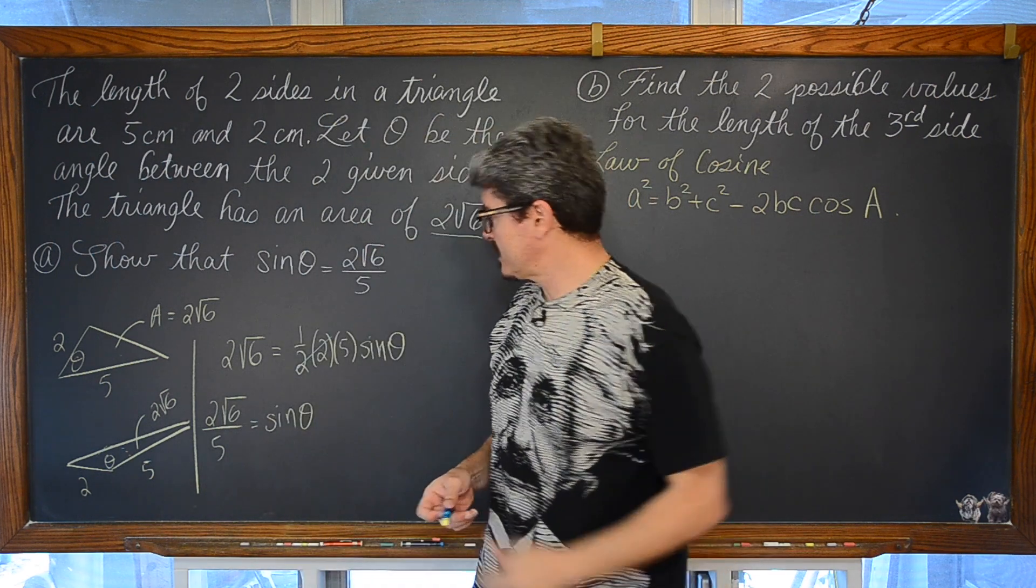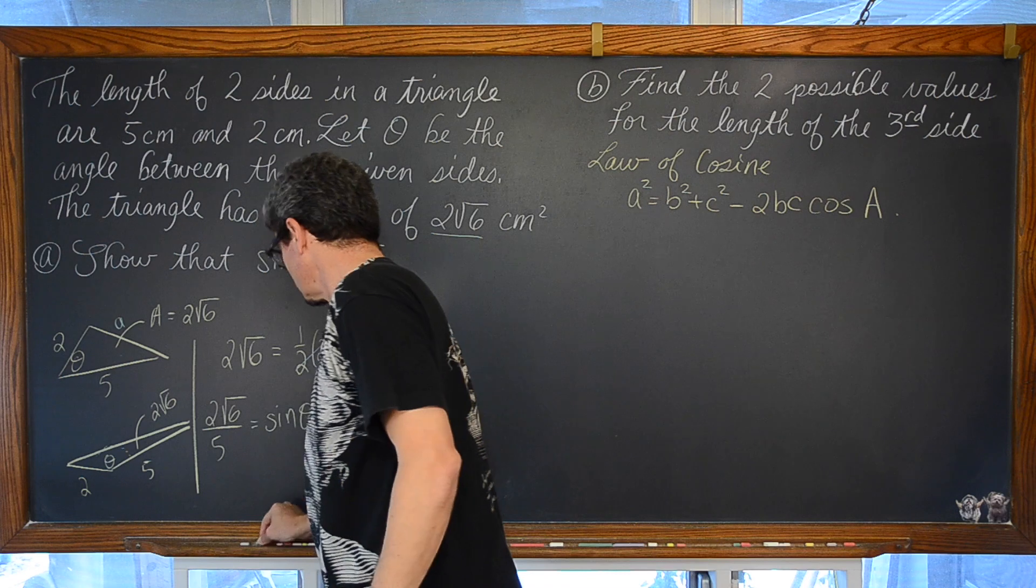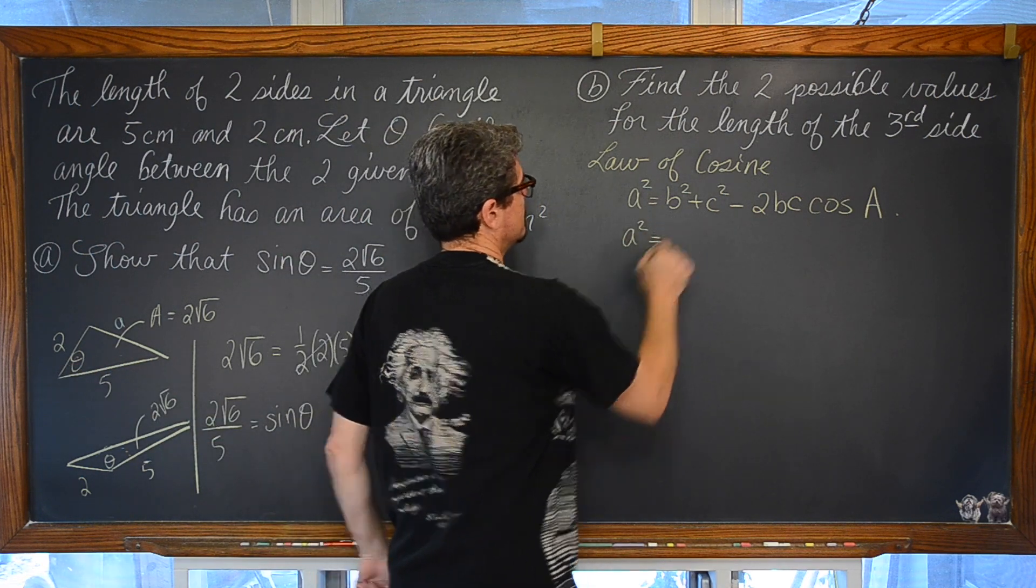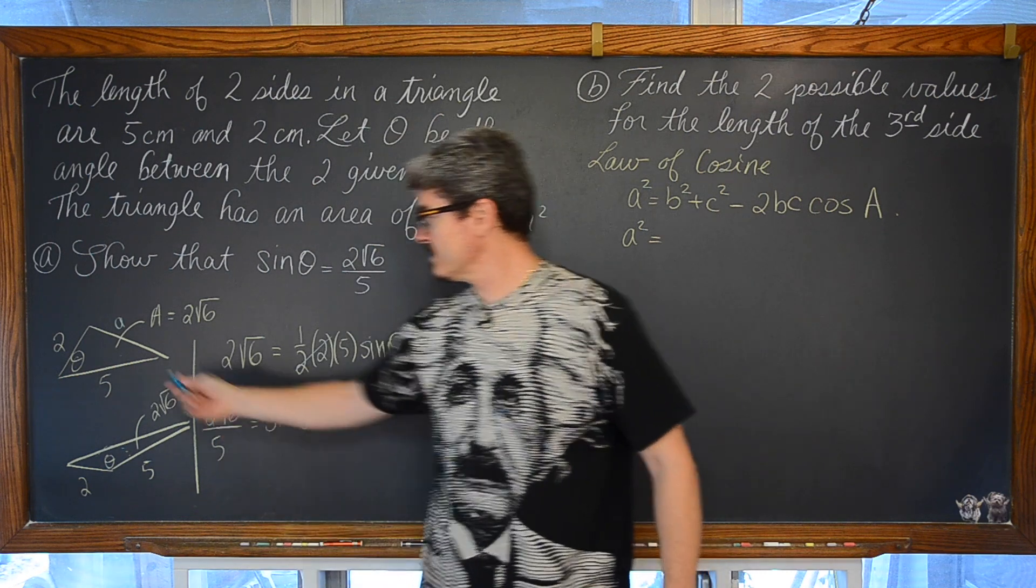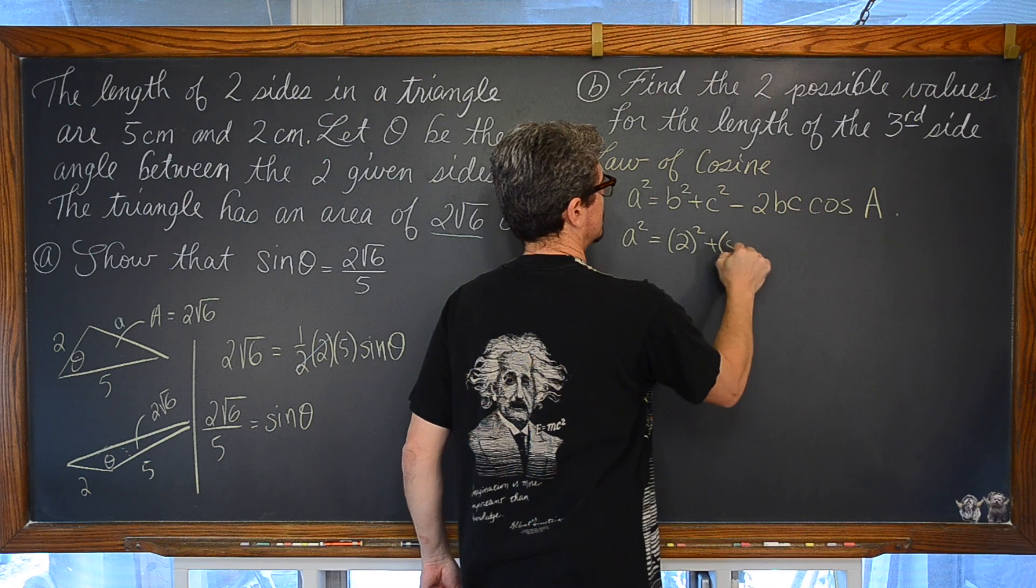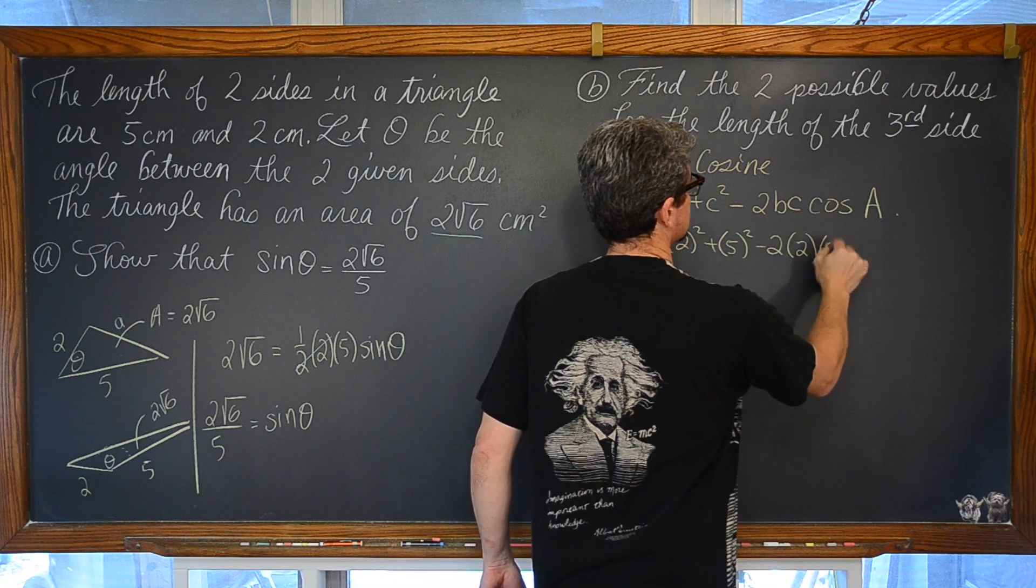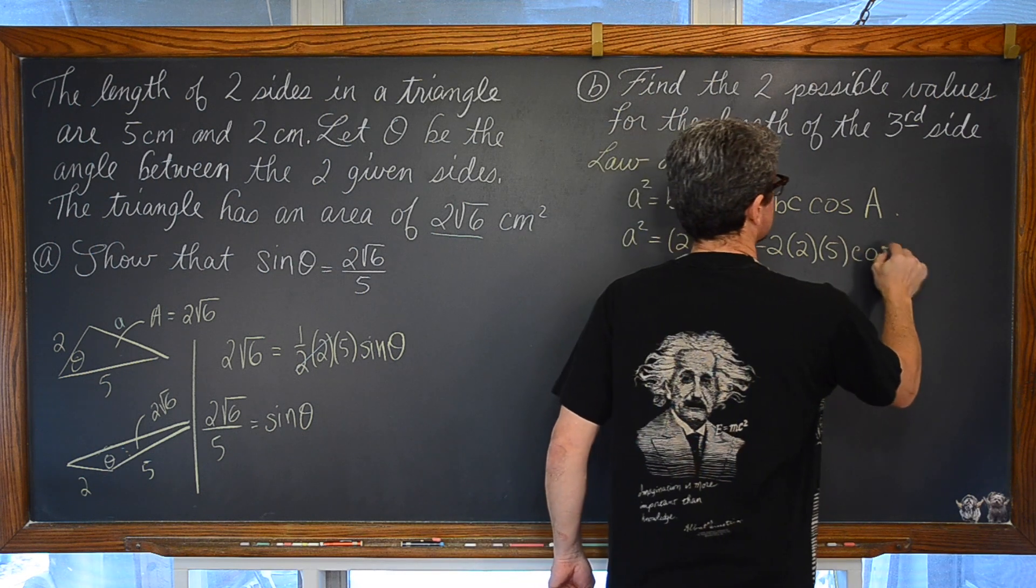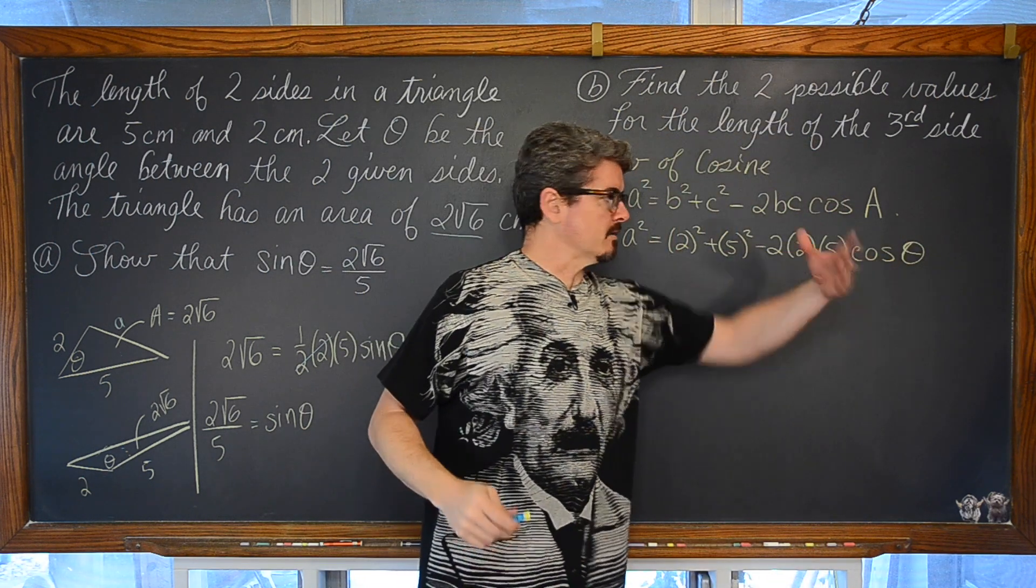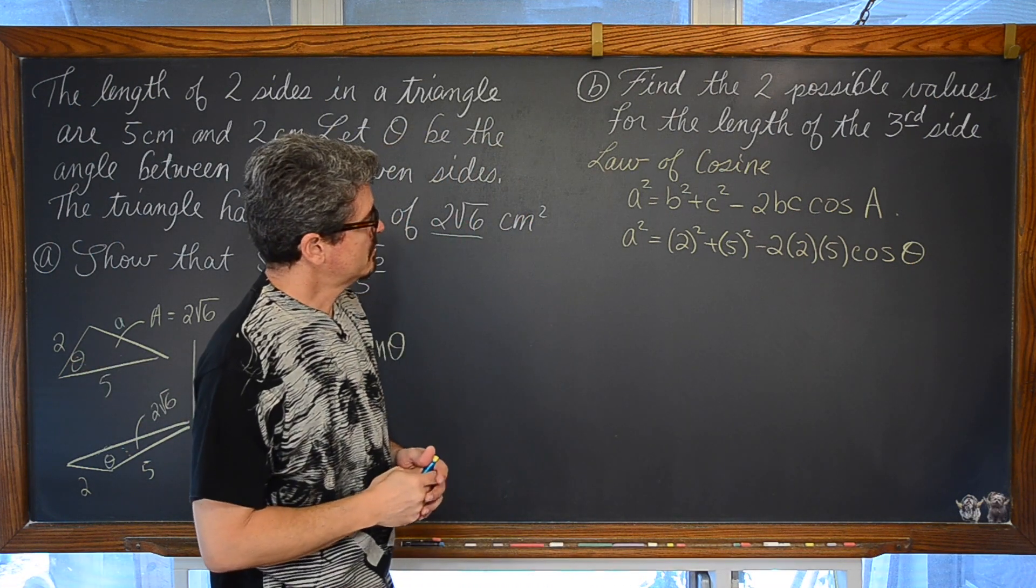The side, and let's call it A, opposite this angle is going to be equal to the other two sides squared and added together. So, 2 squared plus 5 squared, minus 2 times 2 times 5, times the cosine of angle theta.